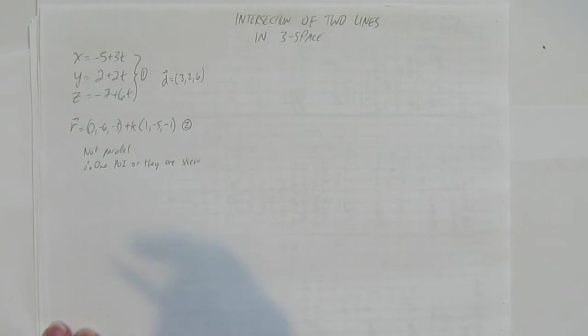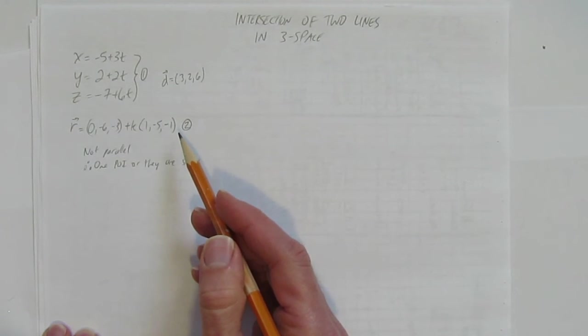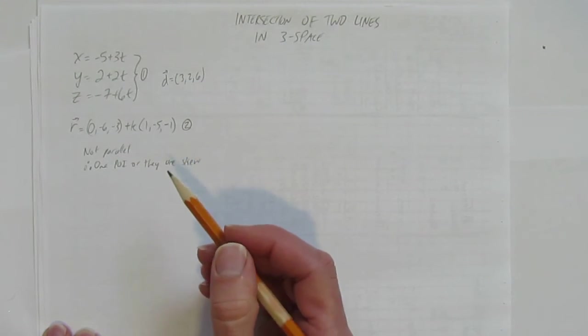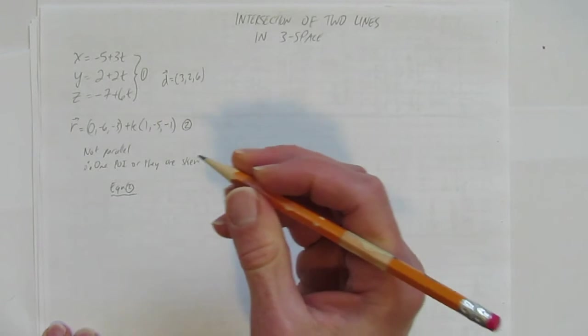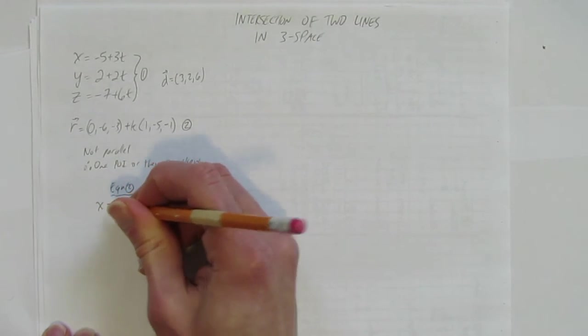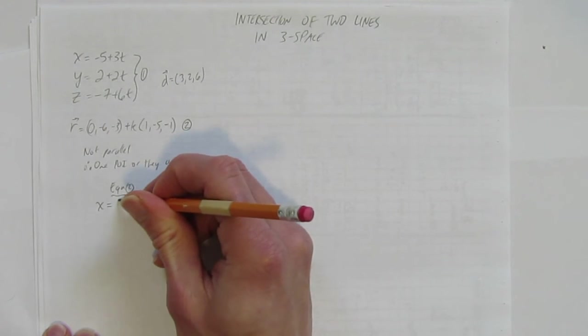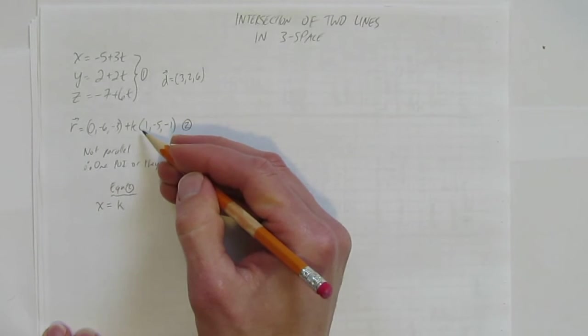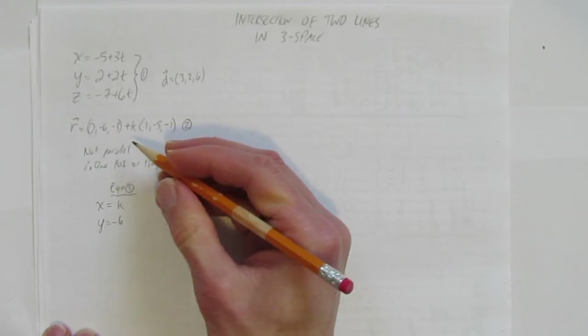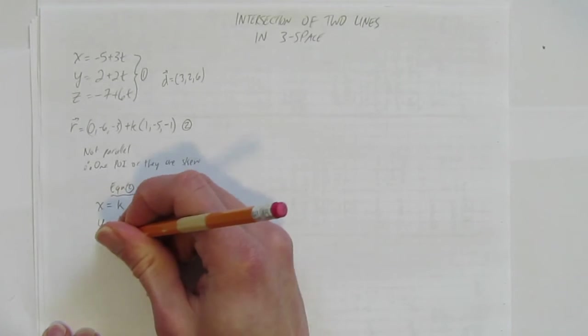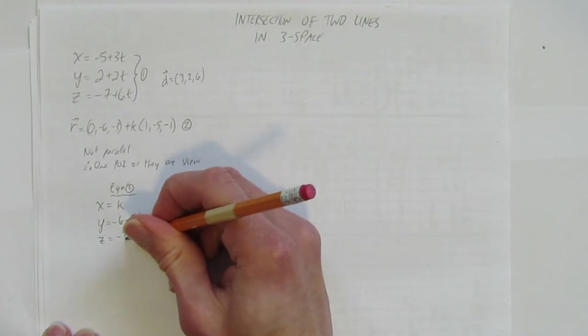Well, we've already got one equation in parametric form, equation 1. We want to make equation 2 into parametric form. So let's get equation 2. Just writing down here, that's from equation 2. And I'm going to rewrite this as parametric equation. The x is 0 plus 1k, so I'm just going to write k. 0 plus k is just k. Y equals negative 6 minus 5k. And z equals negative 3 minus k.